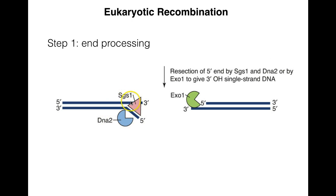The five-prime ends are further trimmed back by either DNA2 and SGS1 working together, or by XO1 — and XO nucleases trim back the five-prime end to leave larger overhangs on the three-prime end.